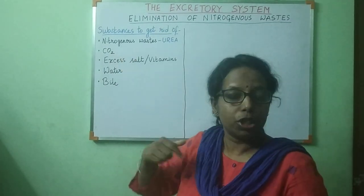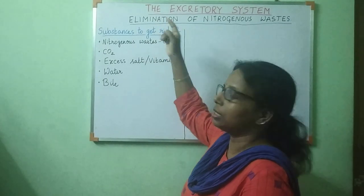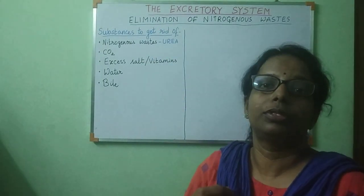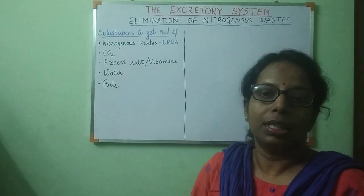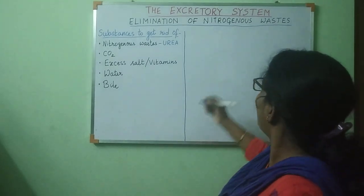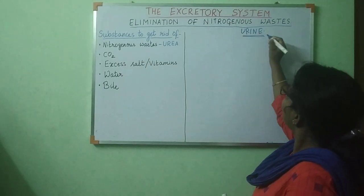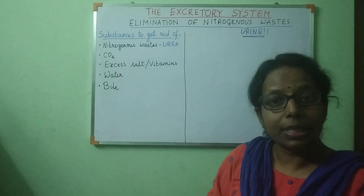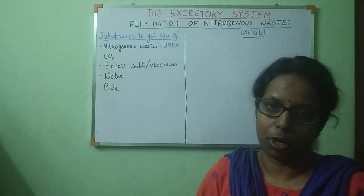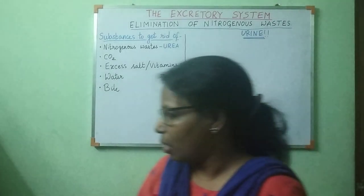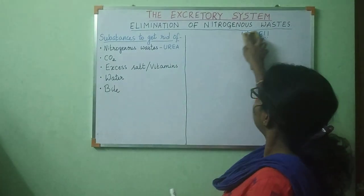Excess CO2 is given out by our respiratory system. But the prime importance of this chapter is how we get rid of nitrogenous wastes produced in our body. These nitrogenous wastes are given out in the form of urine. In this chapter, we will see how urine is produced and how we get rid of it. First, our focus should be on knowing what our excretory system is made up of.